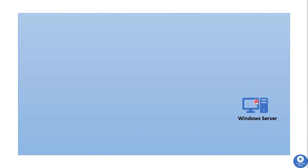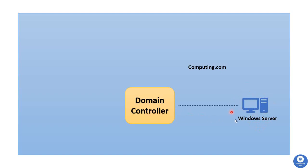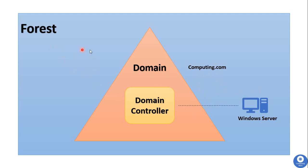When you install the Active Directory feature on a Windows Server for a domain — say, computing.com — the Domain Controller feature is installed on that server. One forest hierarchy is created for the domain. The forest is the topmost logical container in an Active Directory configuration, containing domains, users, computers, and group policies. All five FSMO roles are initially assigned to this first Domain Controller and can be transferred if necessary.